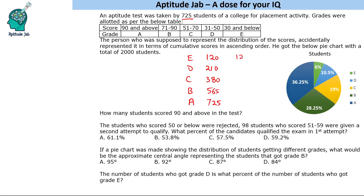So E will be 120 students. For D, this minus this gives 90 students. C will be this minus this — 170 students. This is 185 and this is 160. So it is quite easy to calculate the actual numbers.